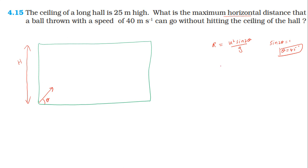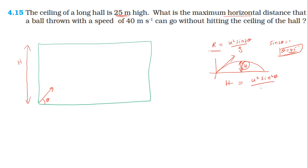However, the maximum height of the projectile must not exceed 25 meters — the ceiling height. Using the maximum height formula: H = u² sin²θ / 2g, with u = 40 m/s and θ = 45 degrees: 40 × 40 × sin²45° divided by 2 × 9.8. Sin²45° = 1/2, so this gives approximately 40 meters, which exceeds the ceiling. Therefore the angle must be adjusted.